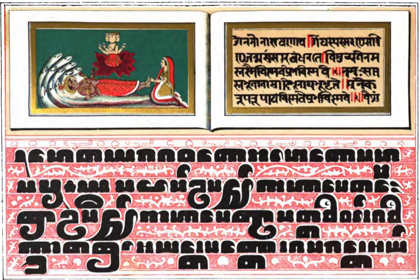Bhikkhu Bodhi, summarizing the current state of scholarship, states that the language is '...closely related to the language or, more likely, the various regional dialects that the Buddha himself spoke.' Scholars regard this language as a hybrid showing features of several Prakrit dialects used around the 3rd century BCE, subjected to a partial process of Sanskritization. While the language is not identical to what the Buddha himself would have spoken, it belongs to the same broad language family and originates from the same conceptual matrix. This language thus reflects the thought world that the Buddha inherited from the wider Indian culture into which he was born, so that its words capture the subtle nuances of that thought world.